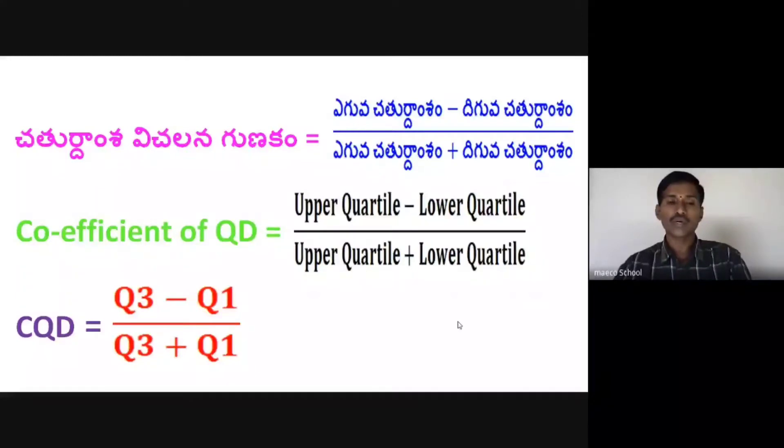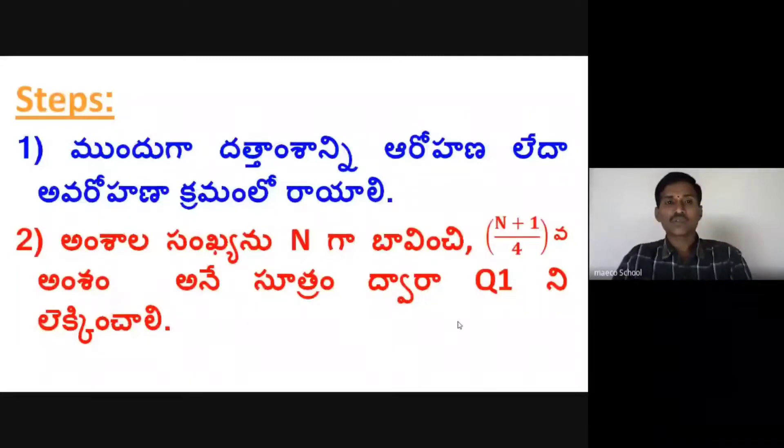Next, the steps for Individual Series. First, we should arrange the data in ascending or descending order. Second, find the value of N and then calculate Q1 using the formula. Then calculate Q3.